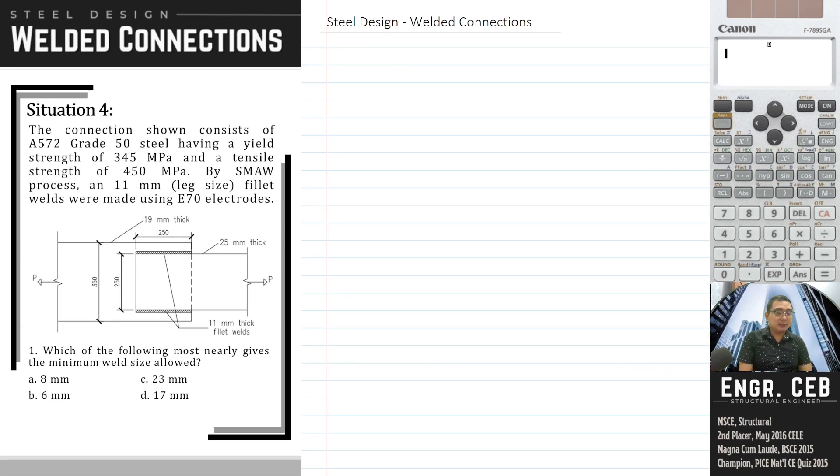Situation 4. The connection shown consists of A572 grade 50 steel having a yield strength of 345 MPa and a tensile strength of 450 MPa. By SMAW process, 11mm fillet welds were made using E70 electrodes.